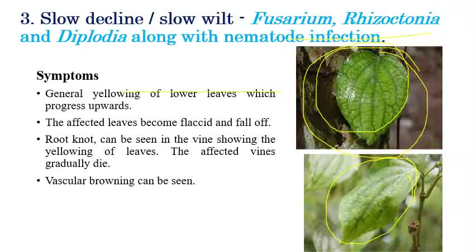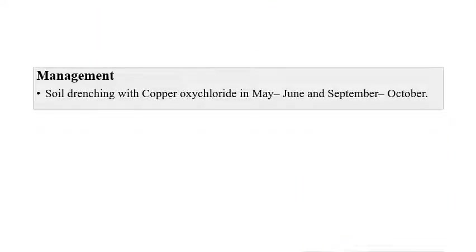Affected vines gradually die and production of good quality leaves is completely lost. For management, soil drenching with copper oxychloride in May-June and September-October is recommended to control this disease.